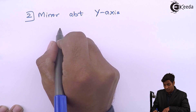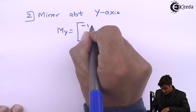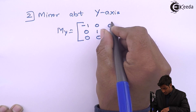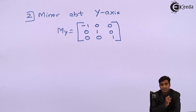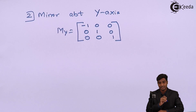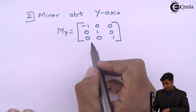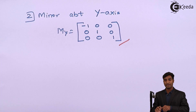We have the standard matrices for mirror about the y-axis: [-1, 0, 0; 0, 1, 0; 0, 0, 1]. When reflecting any point about the y-axis, the sign of the x-coordinate changes and the sign of the y-coordinate remains the same. That is why we write minus 1 for the x component. This is the matrix for mirror about the y-axis.